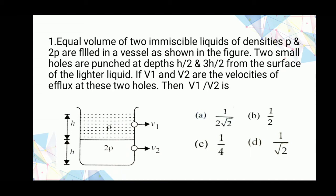Two small holes are punched at depths h/2 and 3h/2 from the surface of the lighter liquid. If v1 and v2 are the velocities of efflux at these two holes, then v1/v2 is?